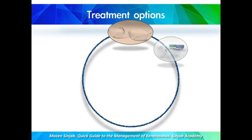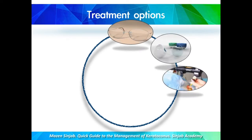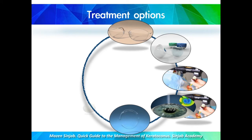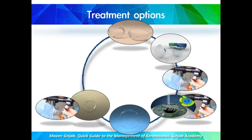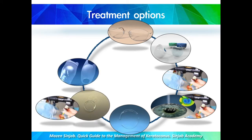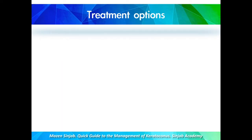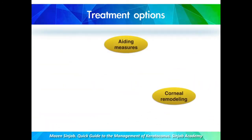The treatment options are: glasses, contact lenses, corneal cross-linking, corneal cross-linking with customized laser treatment, intracorneal rings, myring with and without corneal cross-linking, phakic IOL implantation, and keratoplasty. We can divide these options into three categories: aiding measures, corneal remodeling, and corneal transplant.